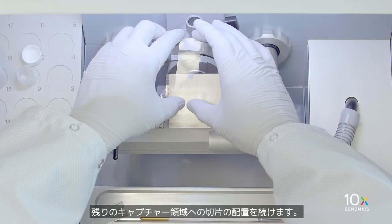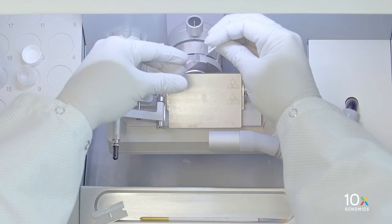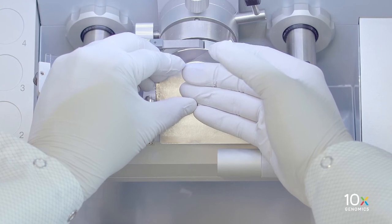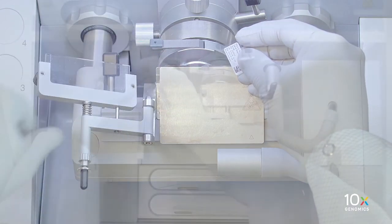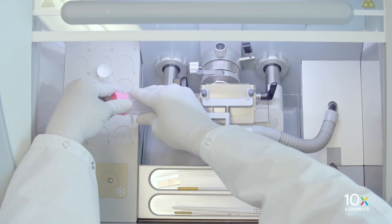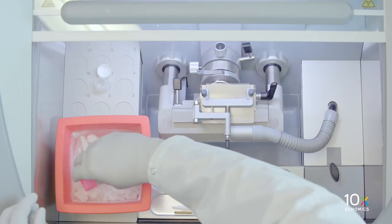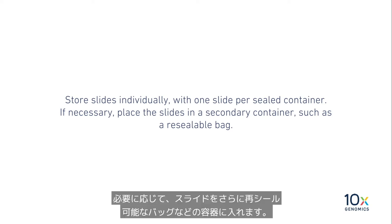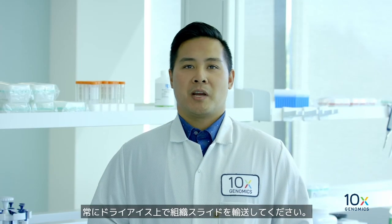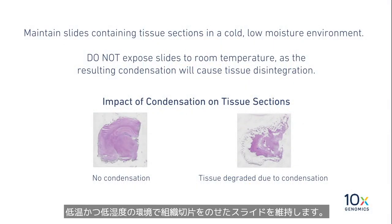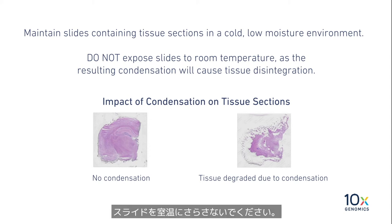Continue transferring sections onto the remaining capture areas. Transfer the slide containing the tissue sections to a slide mailer, seal, and place in dry ice. Store slides individually with one slide per sealed container. If necessary, place the slides in a secondary container such as a resealable bag. Make sure to transport the tissue-containing slides on dry ice at all times.